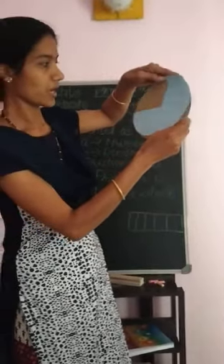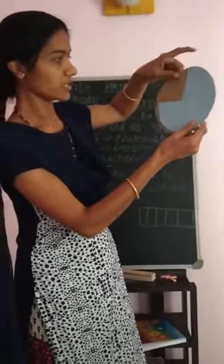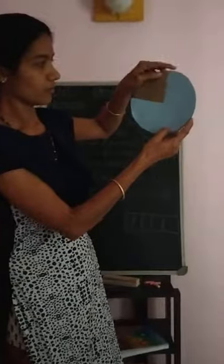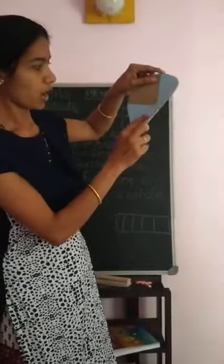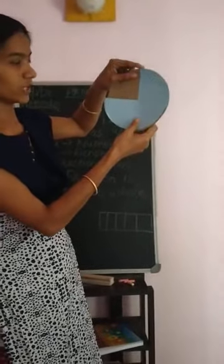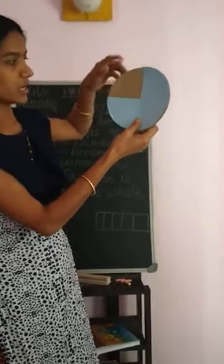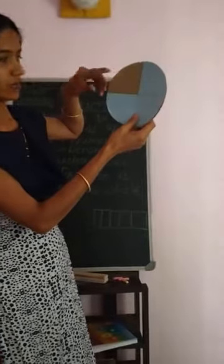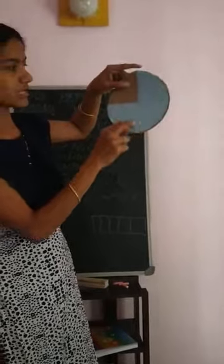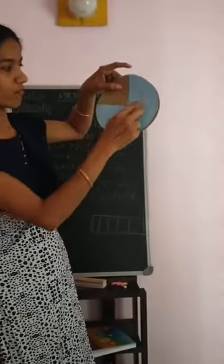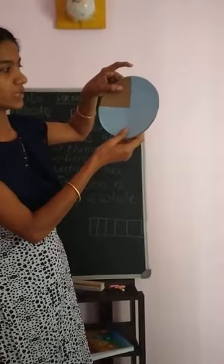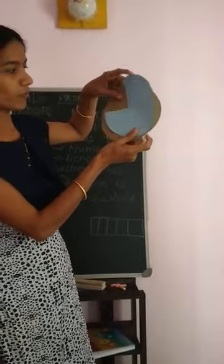Next, I am taking — see — 1, 2, 3 blue shades, blue parts. And the total part is 4, with 3 blue shades, right? So 3 by 4.